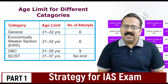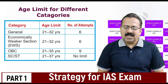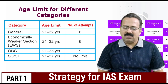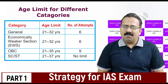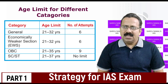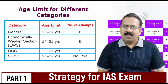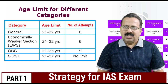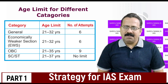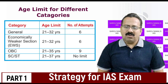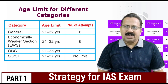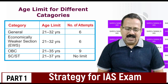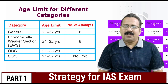Then, for OBC — other backward class — candidates, there is 3 years of age relaxation, so the age limit is 21 to 35, and the number of attempts is 9. Then, for candidates belonging to scheduled caste and scheduled tribe backgrounds, the age limit is 21 to 37 and there is no limit on the number of attempts for SC and ST categories of candidates.